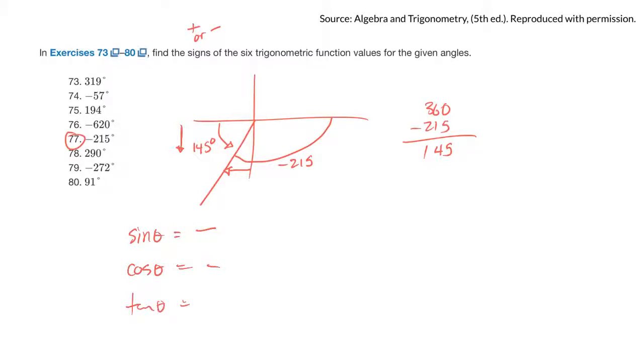Tan theta is a combination of those two. So a negative divided by a negative is going to be a positive. And then the reciprocal ratios just follow the same sign. So if cos theta is negative, secant theta has to be negative. If tan theta is positive, cotan theta also has to be positive.